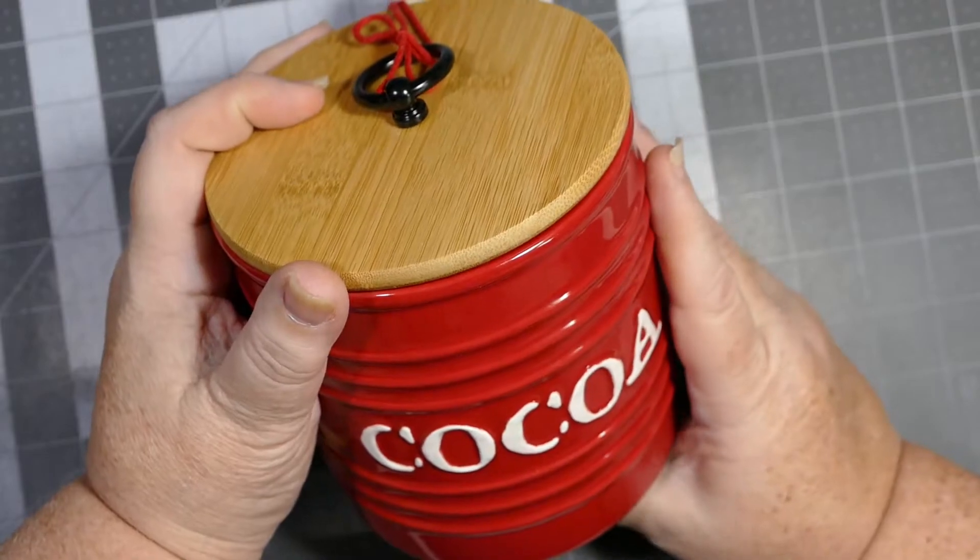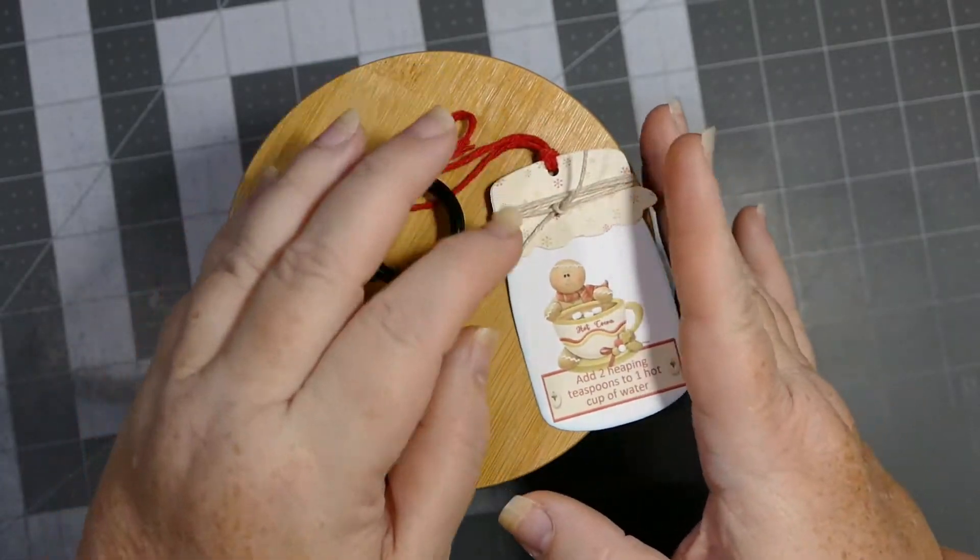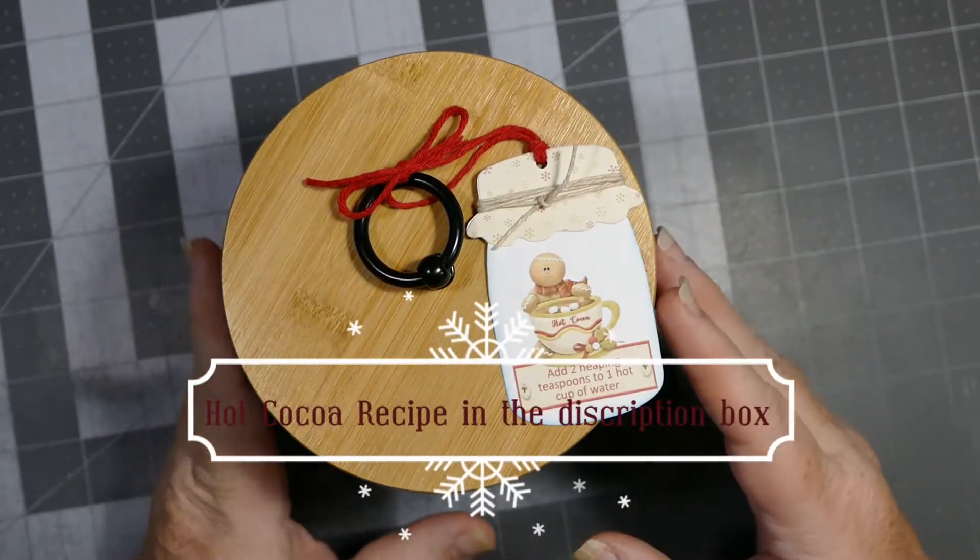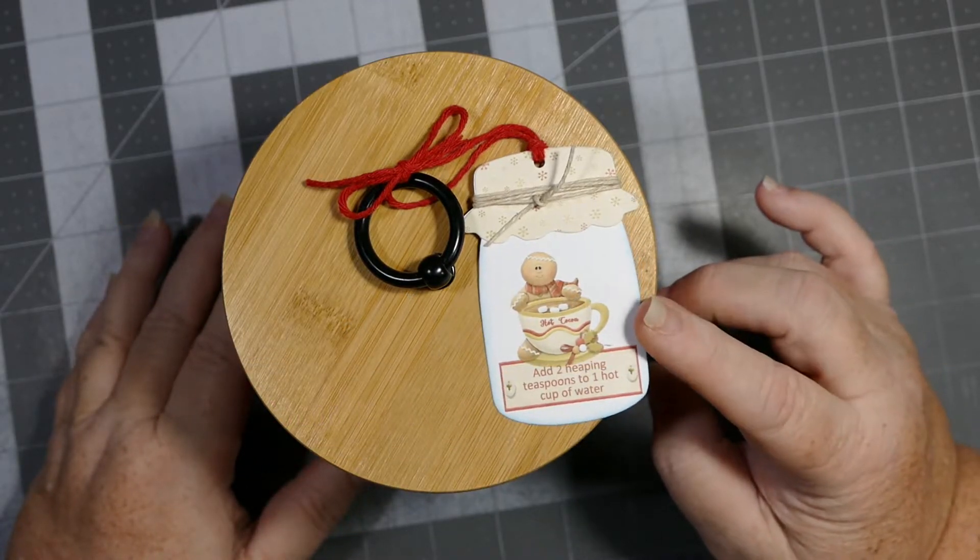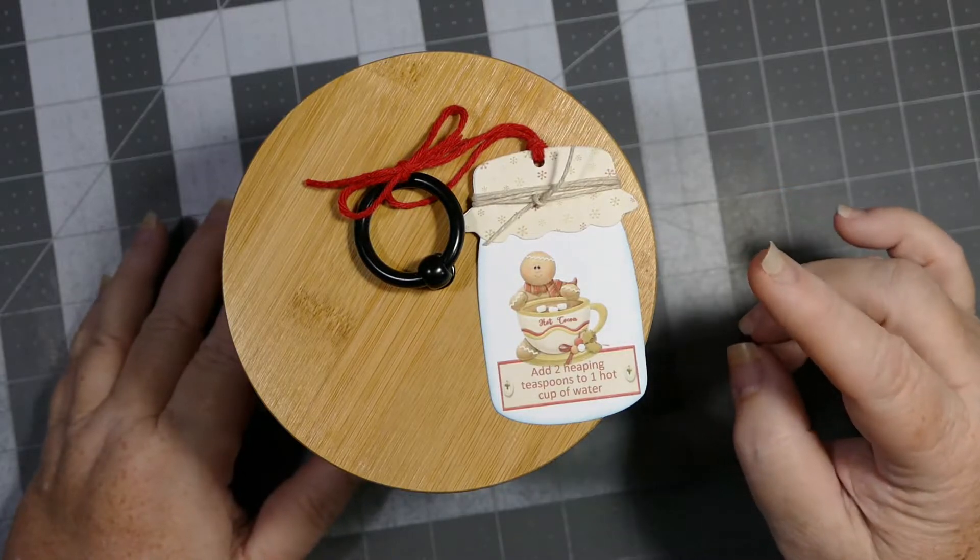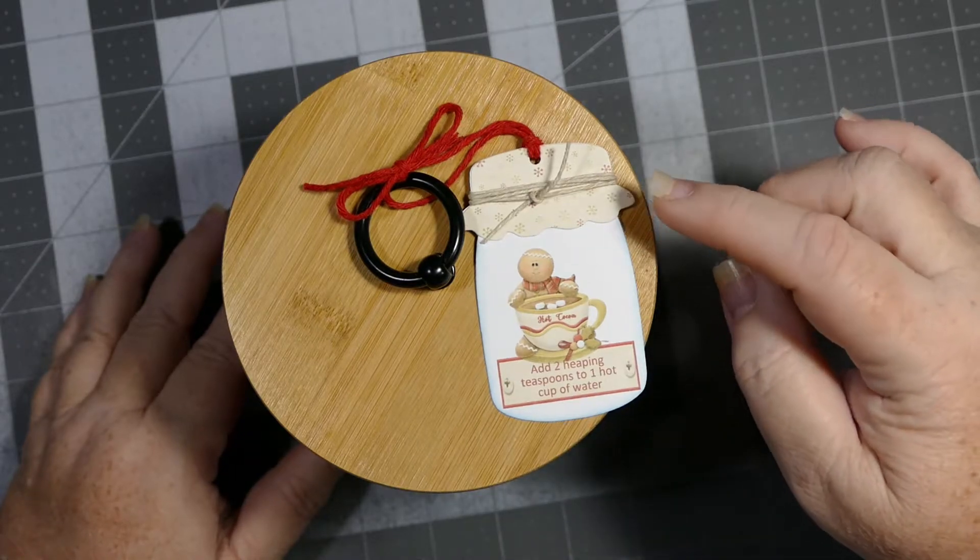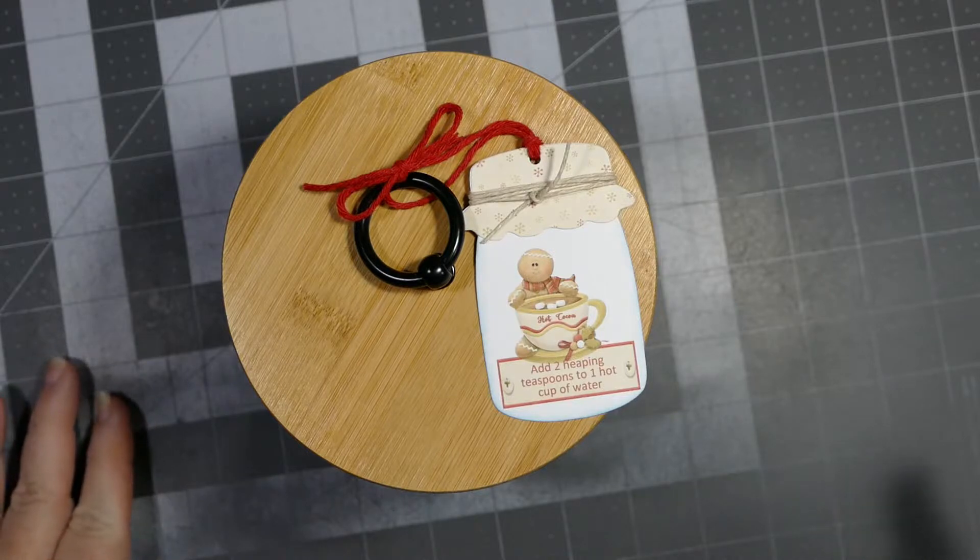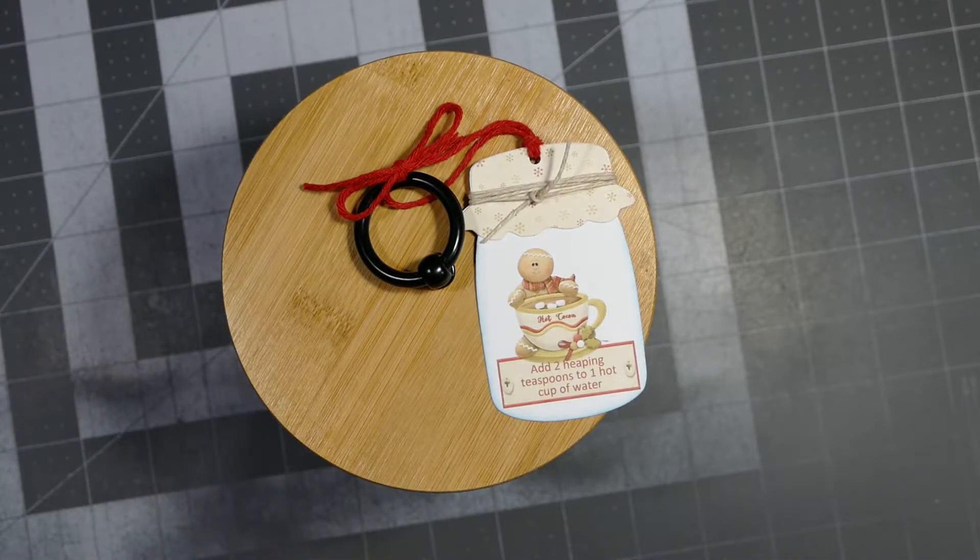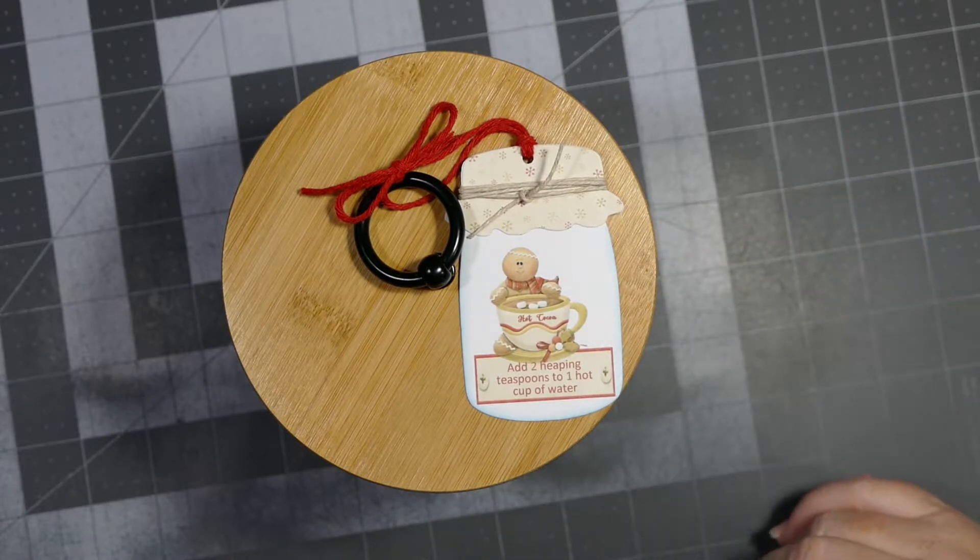So this is what the container looks like and this is what I made to go on the container. I'm just going to sit it right up here so you guys can see it. I used one of my digital collections from Knitwit Collections and used the little gingerbread with the hot cocoa cup and cut it out with a die called Vintage Tea Party from Crafters Companion. I also printed out some digital papers for the little topper.